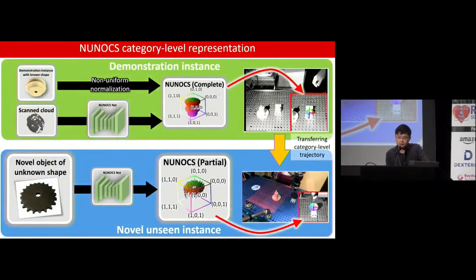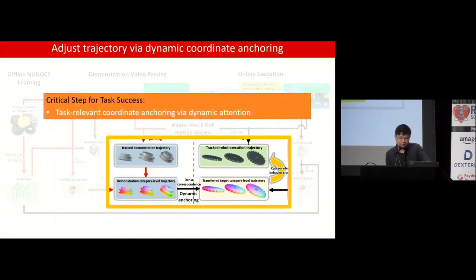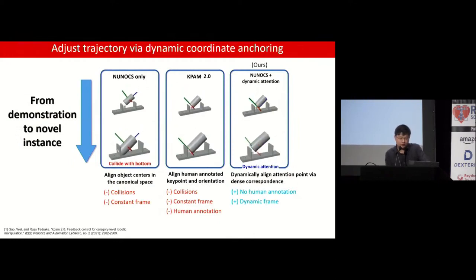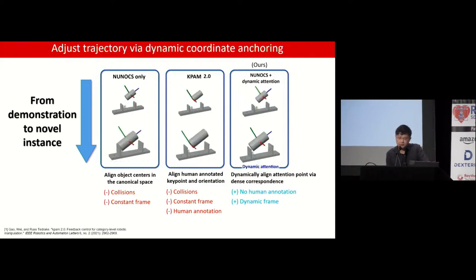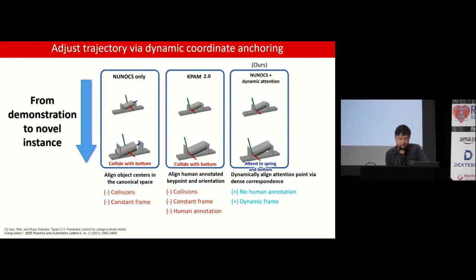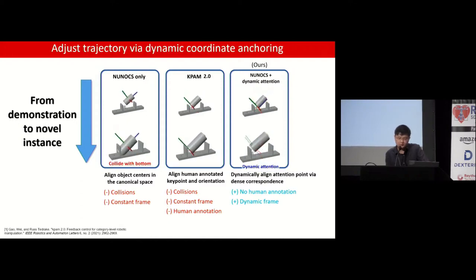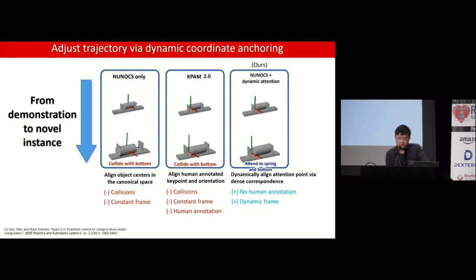Once we have the 9D poses and dense correspondence, we are prepared to transfer the trajectory from one instance to another. We show a comparison of different methods for transferring the demonstration trajectory to a novel unseen instance. NUNOX-only simply aligns based on object centers. KPAM 2.0 aligns based on human-annotated key points and orientations. Our method combines NUNOX learning with dynamic attention that allows dynamically changing the anchoring coordinate frame. As the battery travels along the trajectory, at the later stage it is able to attend to both the spring and the bottom plate to avoid collision — and this process is fully automatic using only the demonstration, without any human annotation.